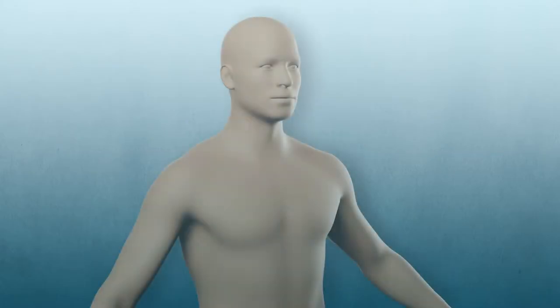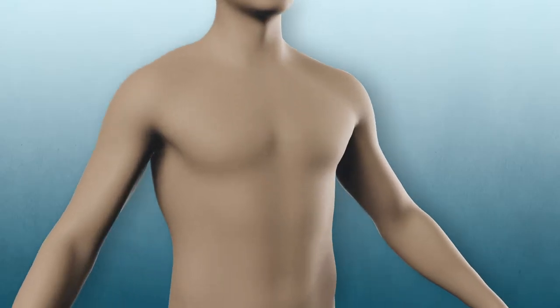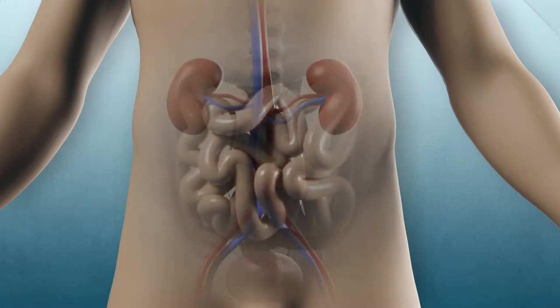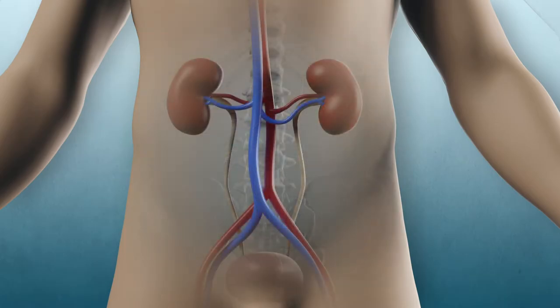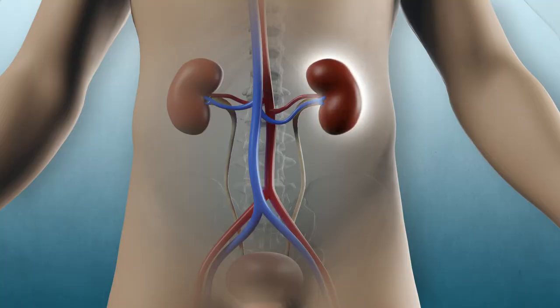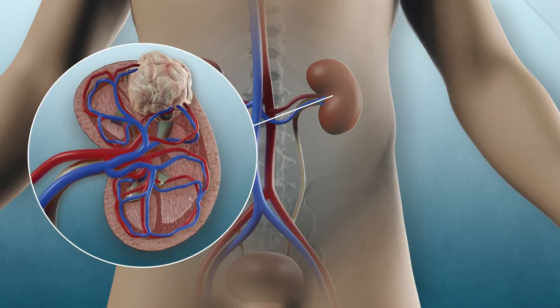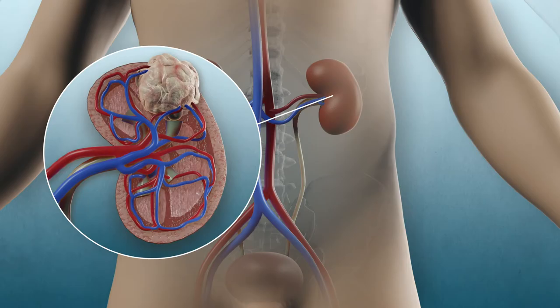You have been diagnosed with kidney cancer or a benign tumor or cyst on your kidney. Your doctor recommends that you have a robot-assisted partial removal of your kidney, also known as a partial nephrectomy or RAPN. This animation shows how the procedure is done.